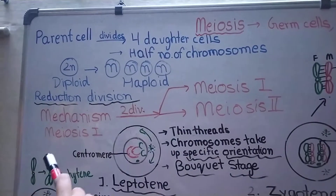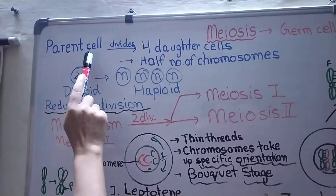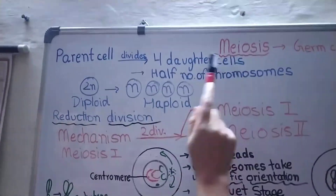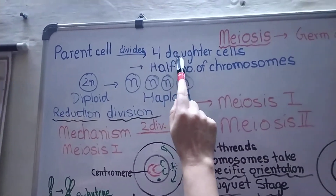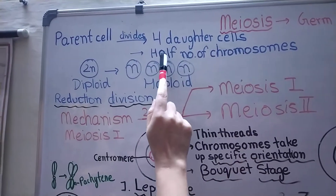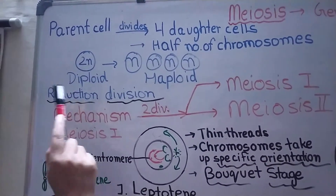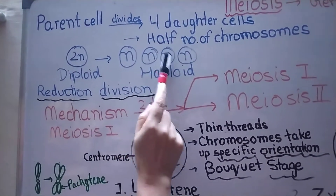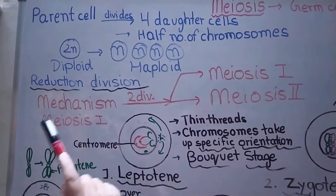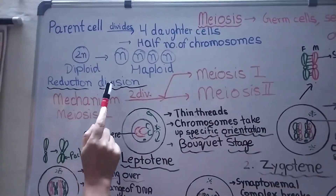Now, what is meiosis? What do you mean by meiosis? In meiosis, a parent cell divides to form four daughter cells, and all these four daughter cells will be haploid — that means they will contain half the number of chromosomes. A diploid parent cell will form four daughter cells which are going to be haploid. That's why meiosis is also known as reduction division.